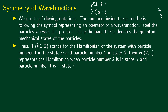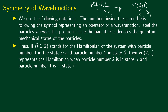The position of these labels inside the parenthesis is also important. ψ(1,2): here label 1 appears in the first position and label 2 in the second position. We shall use this notation for the wave function of a two-particle system with particle 1 in state α and particle 2 in state β. ψ(2,1) would represent a state with particle 2 in state α and particle 1 in state β. So the numbers inside the parenthesis label the particles, whereas the position inside the parenthesis denotes the quantum mechanical states of the particles.